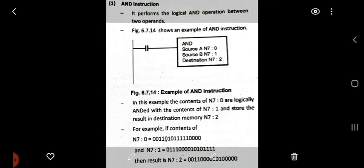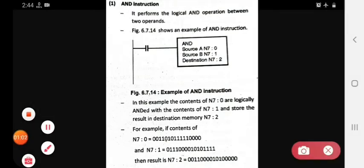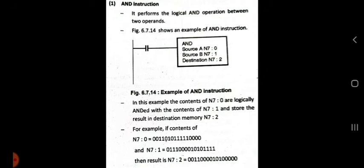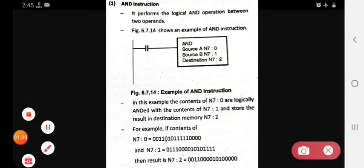See the first point: in this example, the content of N7:0 are logically ANDed with content of N7:1 and store the result in the destination memory N7:2. So the AND operation will happen between these two operands and the result will be saved in the destination.